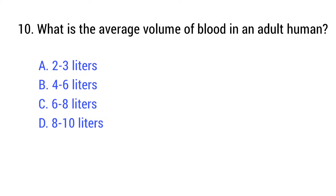Question number 10. What is the average volume of blood in an adult human? The right answer is option B: 4 to 6 liters.